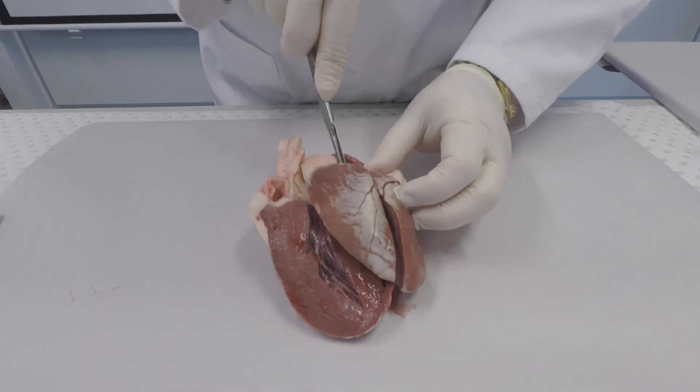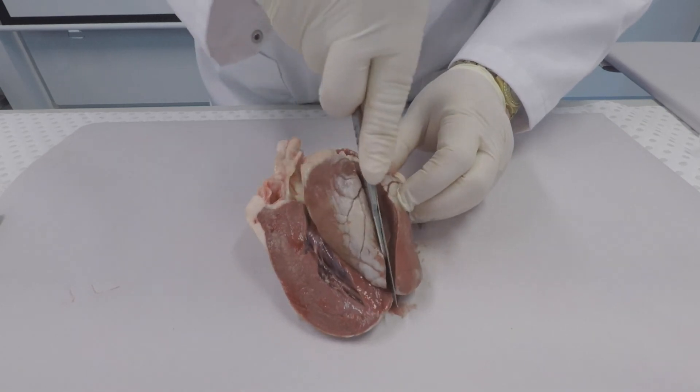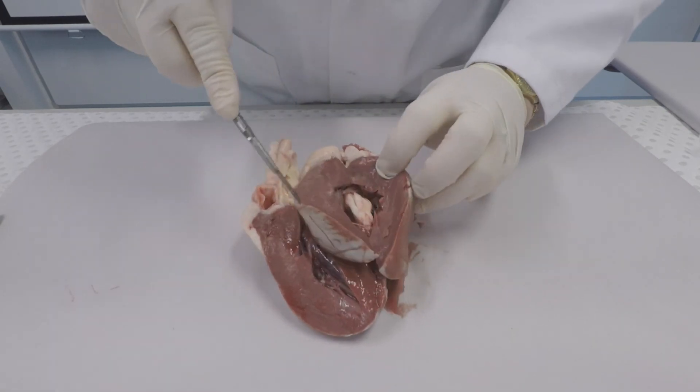Here you can also see one of the first arteries that branches off the aorta to provide oxygen to the heart muscle. Let's check in the ventricle.